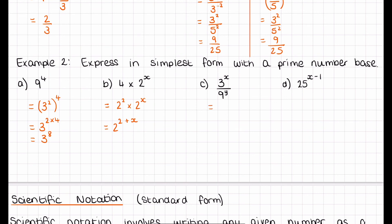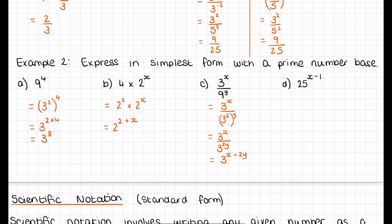Example C: the base should be 3, so it would be 3x over 3 squared times y, which we can write as 3x over 3 to the power of 2 times y. Then we subtract the powers because it's a division. Example D: 25 can be rewritten as 5 squared, and when we do our multiplication, we multiply the 2 by everything in the power on the outside: 2 times the quantity x minus 1, which gives 5 to the power of 2x minus 2. A really common mistake here is doing the 2x but forgetting to multiply the 1 by 2 as well, so they get 2x minus 1, which is incorrect.